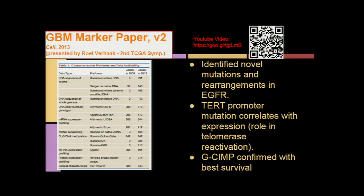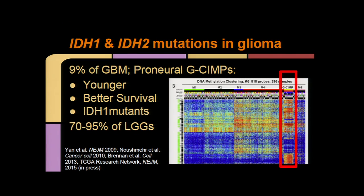I want to highlight three main points from that paper because they relate to what I'm going to present today. First, we identified novel mutations and rearrangements in EGFR using our expanded dataset. The TERT promoter mutation correlates with expression, suggesting a role in telomerase reactivation. And the G-SIMP subtype was confirmed with best overall survival. The IDH1 and IDH2 mutation has been well studied in gliomas, and we reported a high correlation of IDH mutation with an impact on DNA methylation, as represented here.